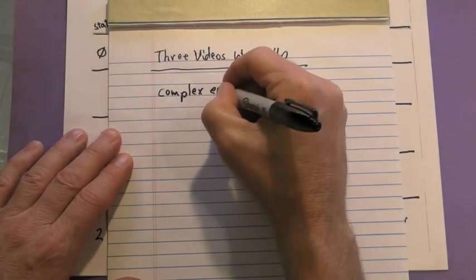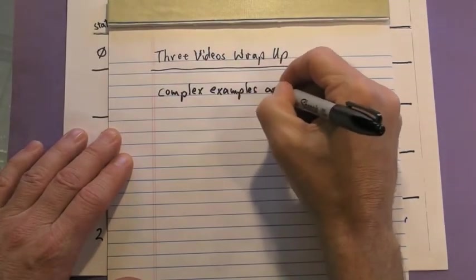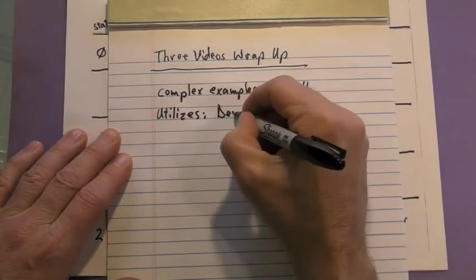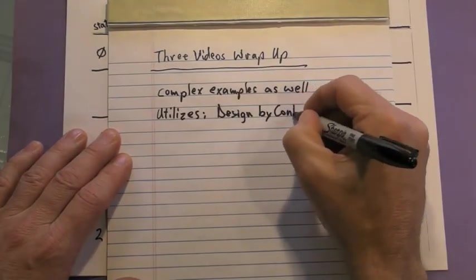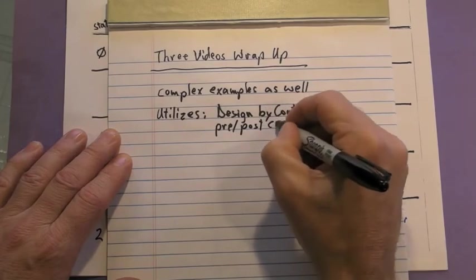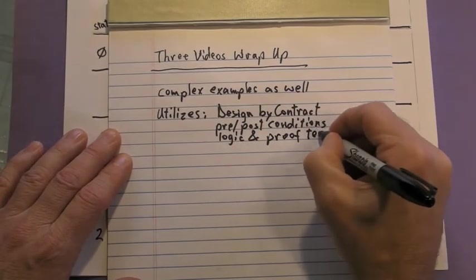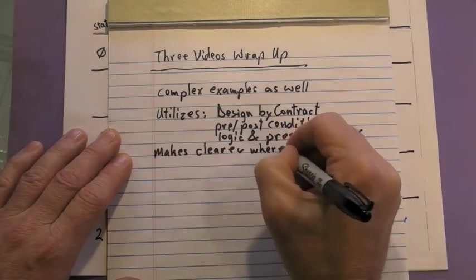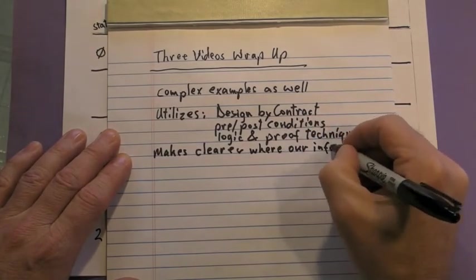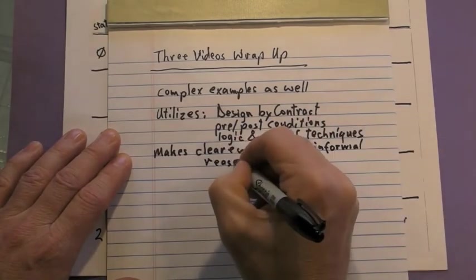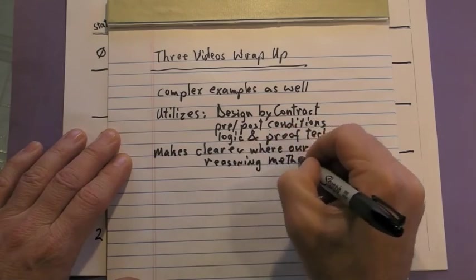Wrapping up, this process works on complex examples as well. It utilizes design by contract, pre and post conditions for operations, and logic and proof techniques. And finally, it makes clearer where our informal methods come from. Thanks for watching, and we'll see you next time.